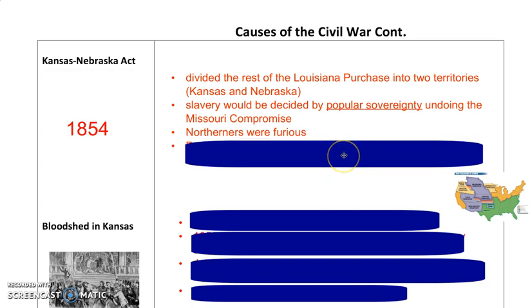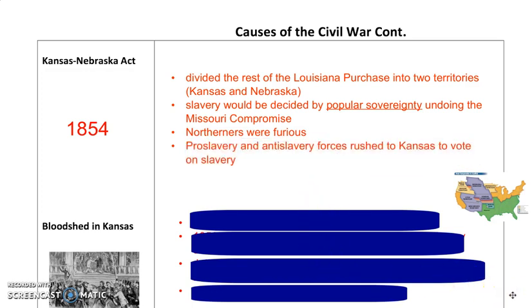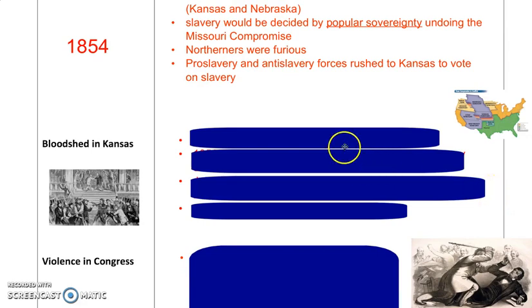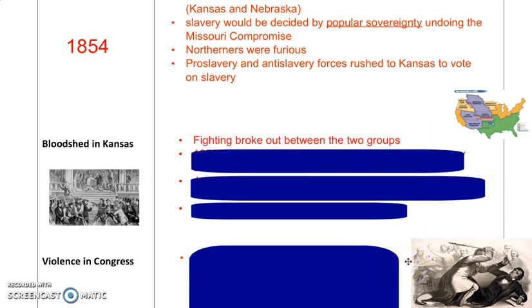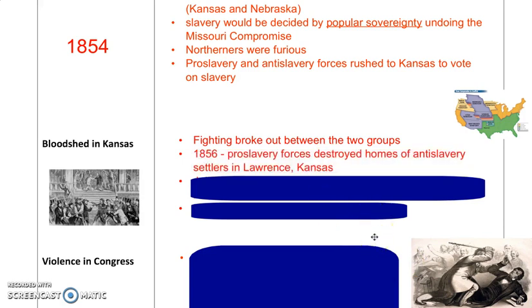Northerners were furious. Because people were going to be voting on it, people from both camps — pro-slavery and anti-slavery — rushed into Kansas to vote on whether Kansas would be slave or free territory. They weren't moving there to settle and live, but to cast their vote to decide whether it would be slave or free.